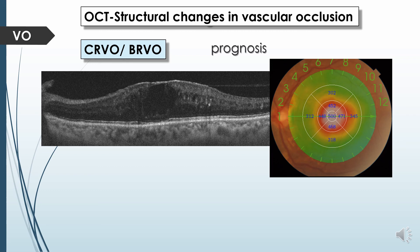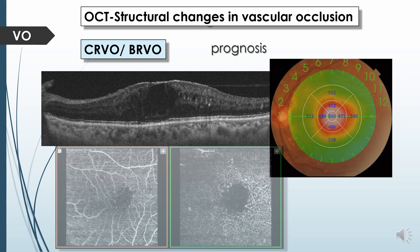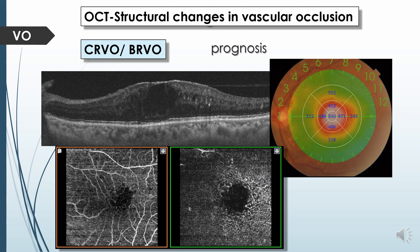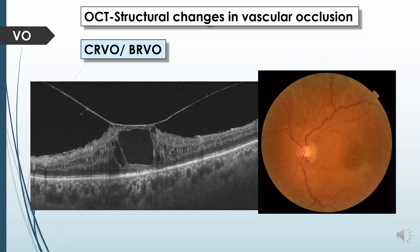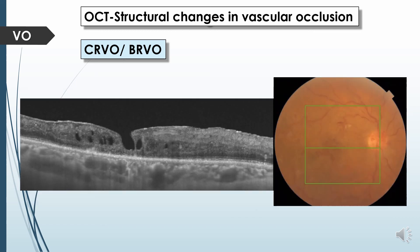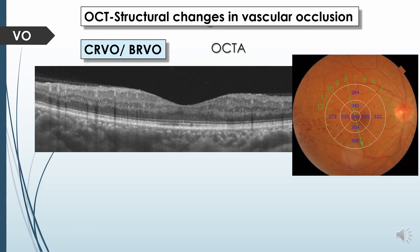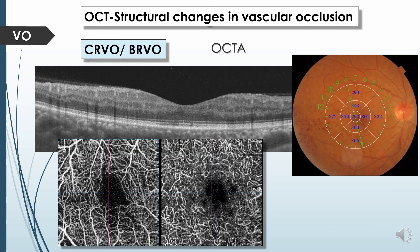OCT angiography can show the extent of ischemia involving the foveal avascular zone in both the superficial and deep capillary plexuses. It is also helpful in detection of complications that prevent visual improvement, such as vitreo-macular traction or lamellar macular hole. OCT angiography can solve the puzzle of diminished vision even after improvement of macular edema, as in patients with old hemispheric vein occlusion where it shows low flow signals, loss of texture of the deep capillary plexus, and widening of the foveal avascular zone denoting extensive ischemia.